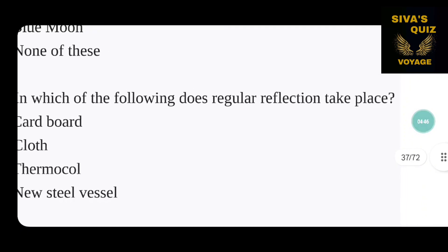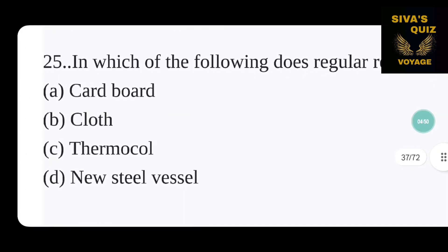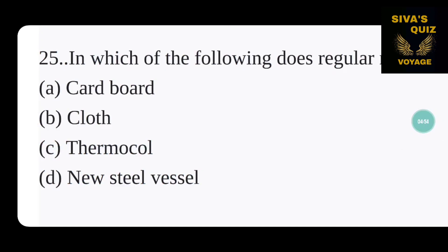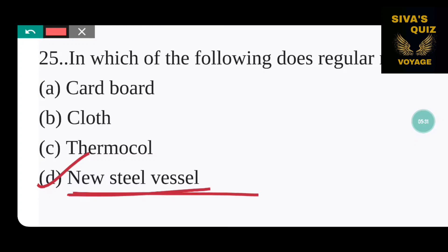In which of the following does regular reflection take place? Regular reflection occurs on a smooth surface. The options are cardboard, cloth, thermo, and new steel vessel. Cardboard and cloth do not have smooth surfaces. A new steel vessel has a smooth surface, so regular reflection takes place in the new steel vessel — that is the correct answer.